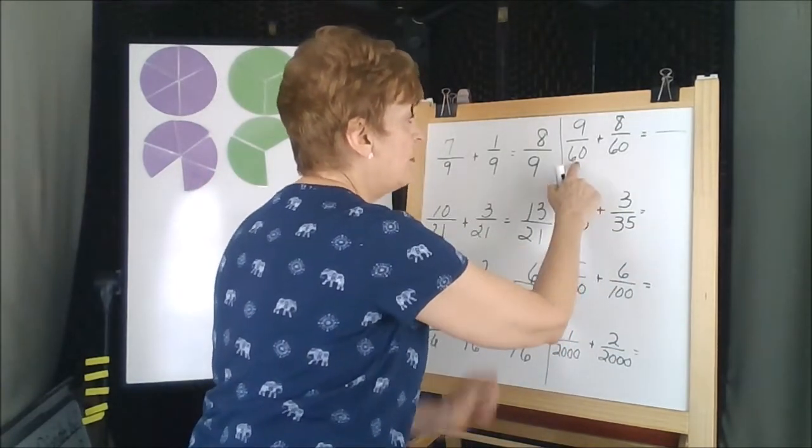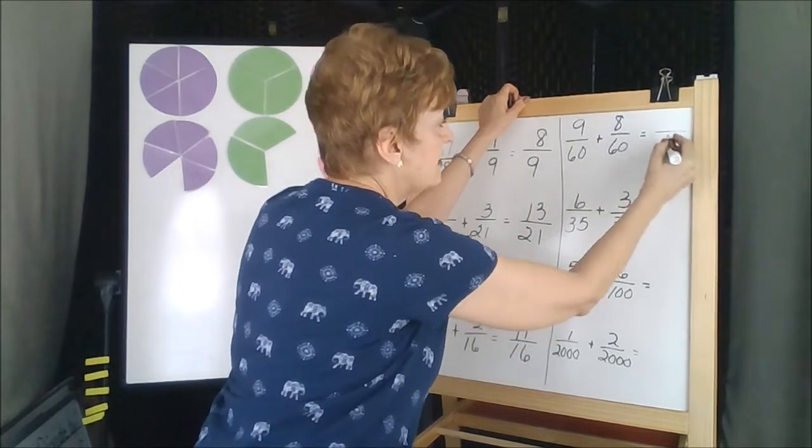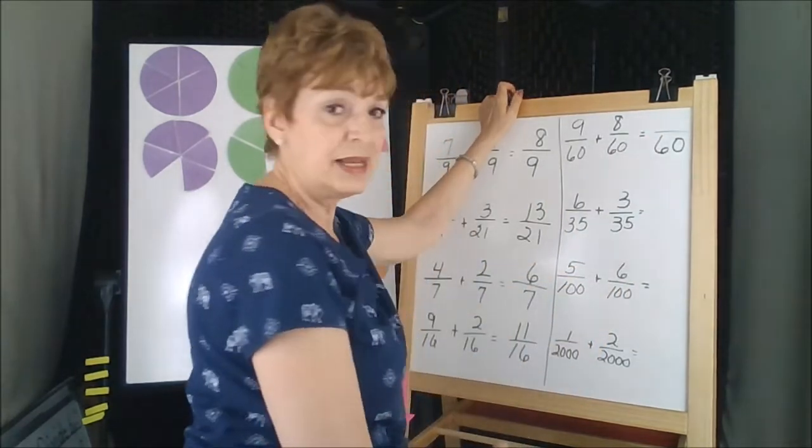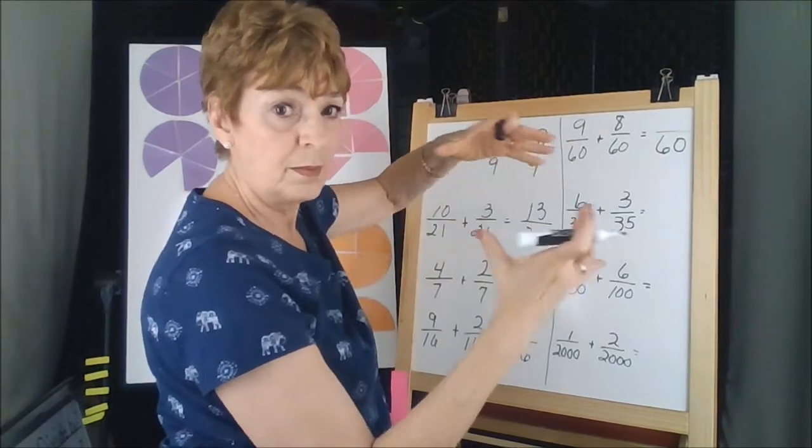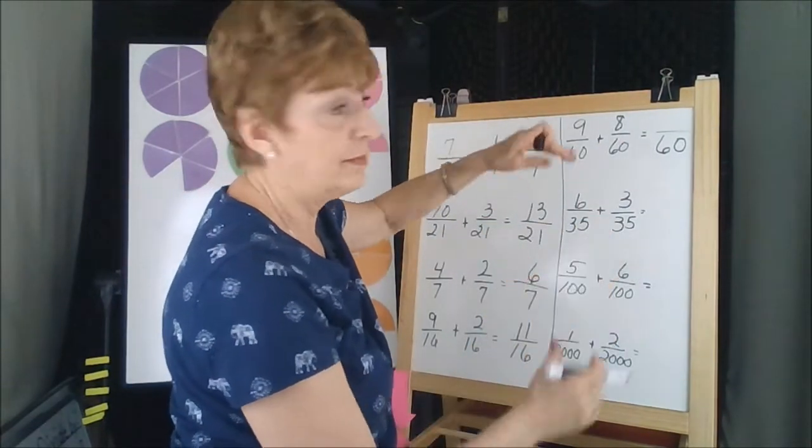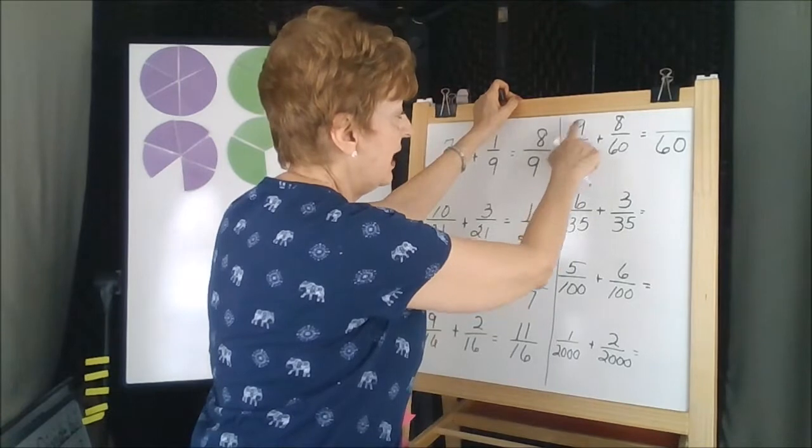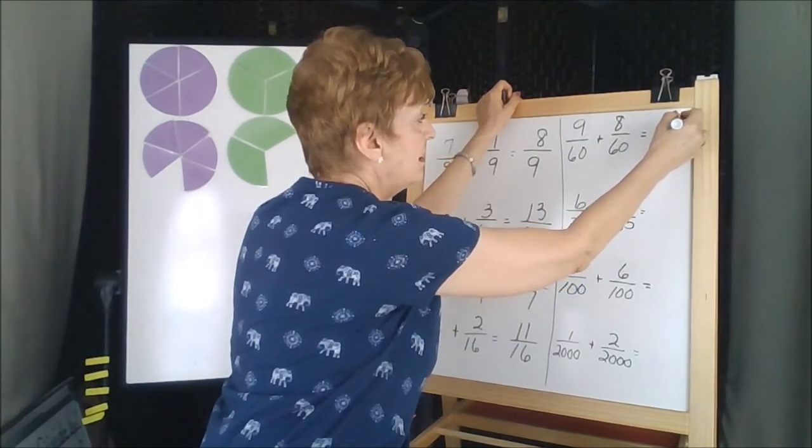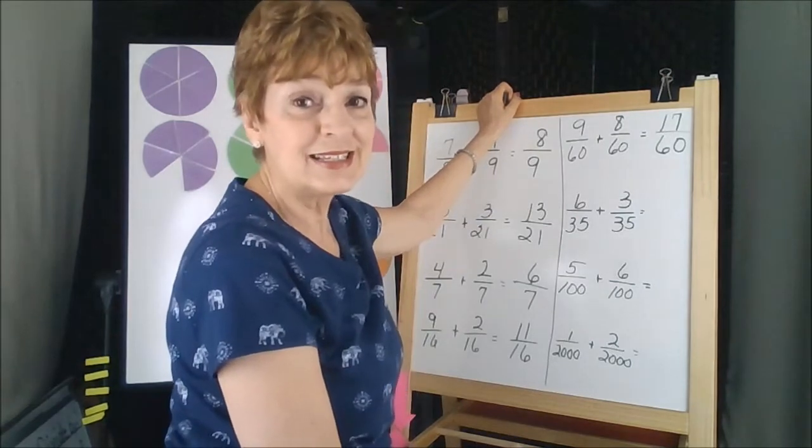So in this case, both of the numbers are 60. So our size piece, there are 60 pieces in the whole birthday cake. Let's add the top numbers, 17. 17 sixteenths.